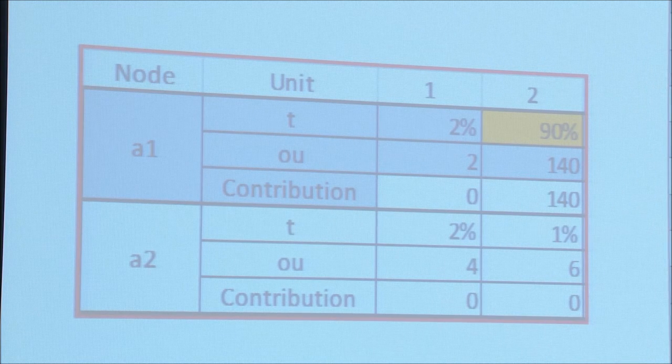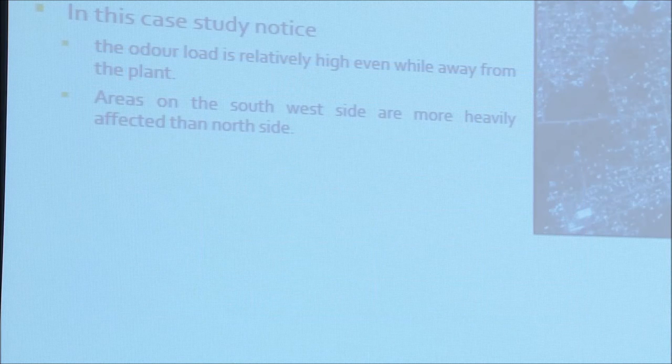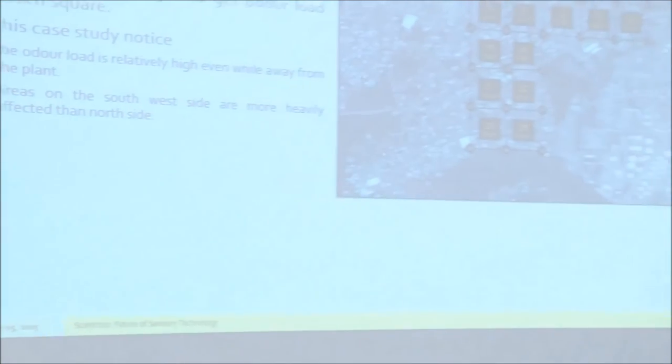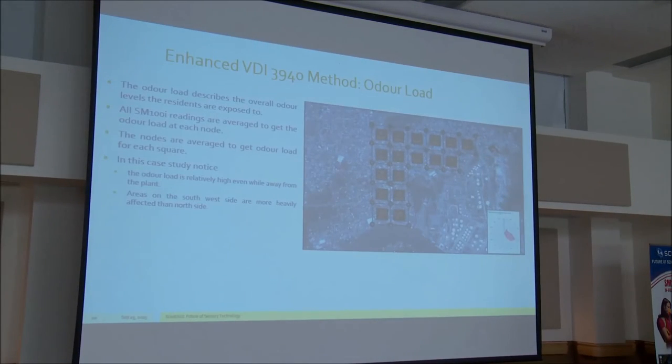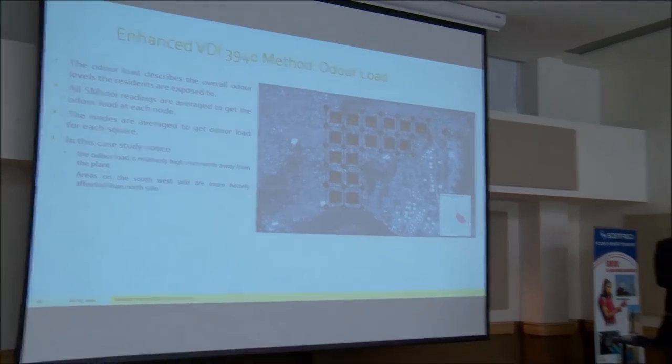We have this data for all the nodes, filling out that large table. First, we can develop the odor load — the total odor the neighbors are subjected to, not just from this factory but in total. We take an average for each node of all the odors measured there, regardless of whether it was considered to be from the factory. In this scenario, the odor loads are stronger as you get closer to the factory and weaker in the corners. But there are some other things you can tell from this.